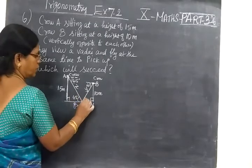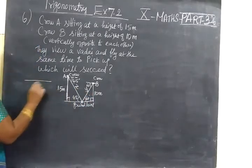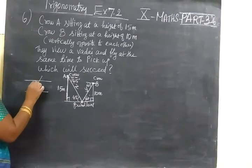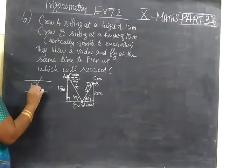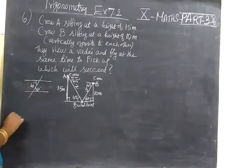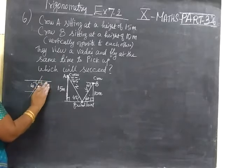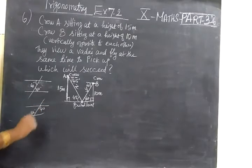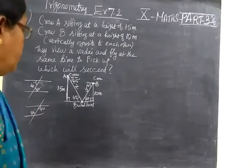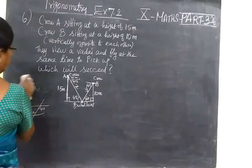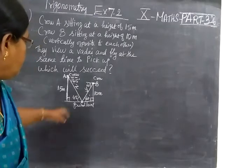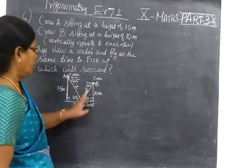Here also 60. Because of the eye level, parallel lines and transversal. The angle of depression, alternate angles are equal. If it is 60, here also 60. But we don't need this angle. Angle of elevation. The question gives angle of elevation, so we mark it as 45 degrees and 60 degrees.